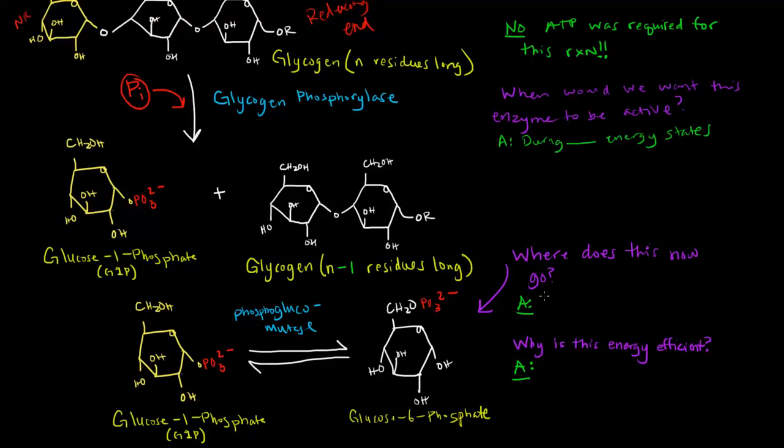This glucose 6-phosphate will go, where have we seen that before? We've seen it in glycolysis. So what it will do is go to glycolysis and end up going through the entire pathway to make ATP.